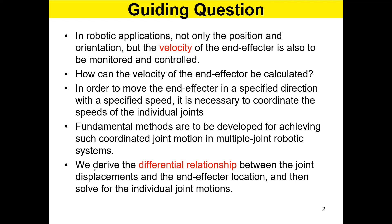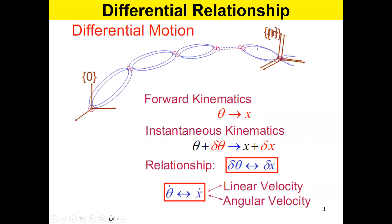Finally, the last point: we derive the differential relationship — speeds — between the joint displacements and the end effector location, end effector deflection. Let's see how we can do that. In fact, it's a bit easier than you would think.